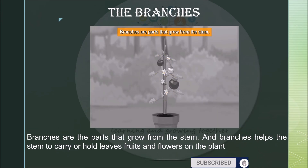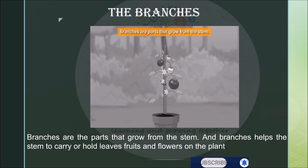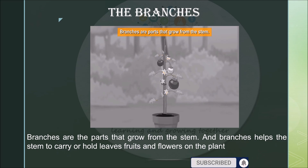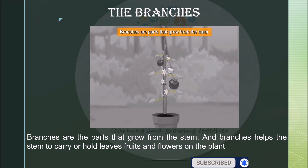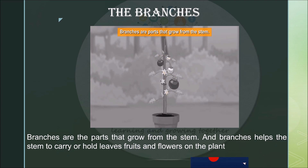Then come the branches. Branches are the parts that grow from the stem. Branches help the stem to carry or hold leaves, fruits, and flowers on the plant. Because of branches, the stem is able to hold or carry the leaves, fruits, and flowers. So branches are an important part of the plant.